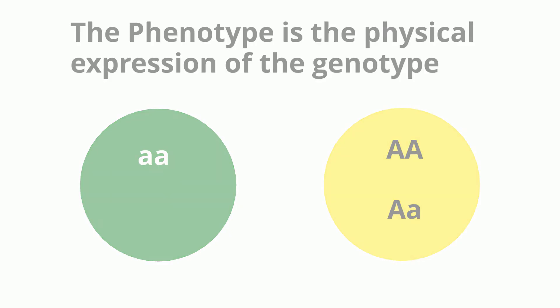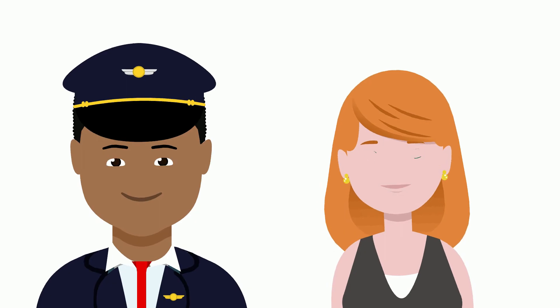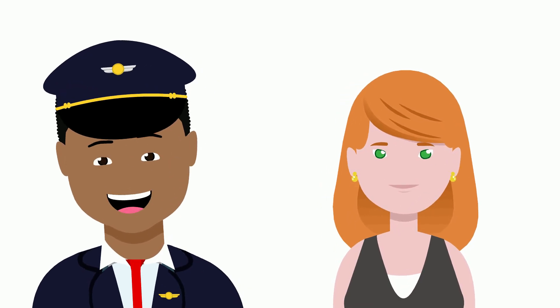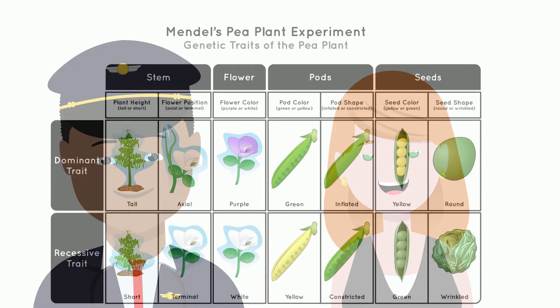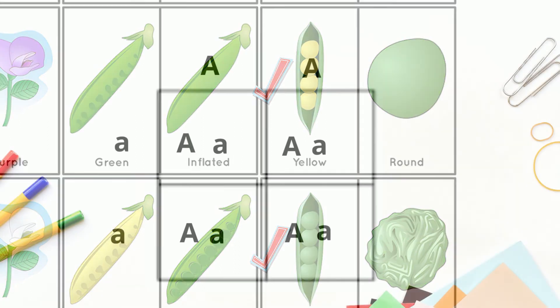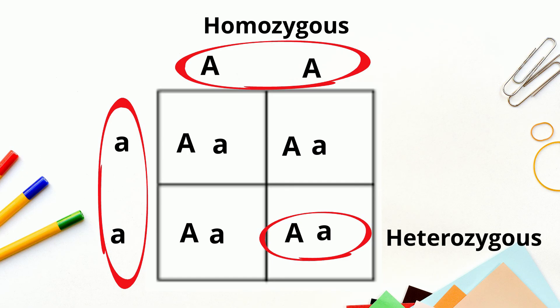For any given trait, an individual inherits one gene from each parent so that the individual has a pairing of two genes. We now understand that different forms of the same trait are called alleles. For example, the trait is seed color, and the different alleles are green or yellow. If the two alleles that form the pair of a trait are identical, then the individual is said to be homozygous. And if the genes are different, then the individual is heterozygous.